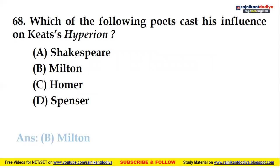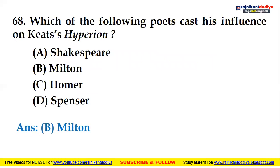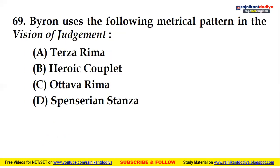Option B is right — Milton. John Milton's influence was there on Keats' Hyperion. The 69th question: Byron uses which metrical pattern in The Vision of Judgment?